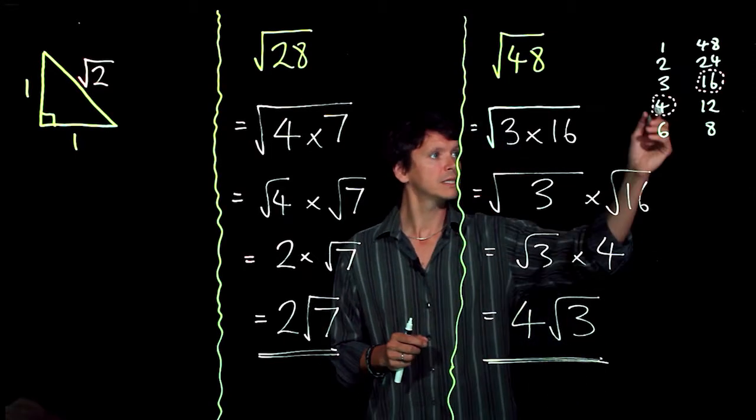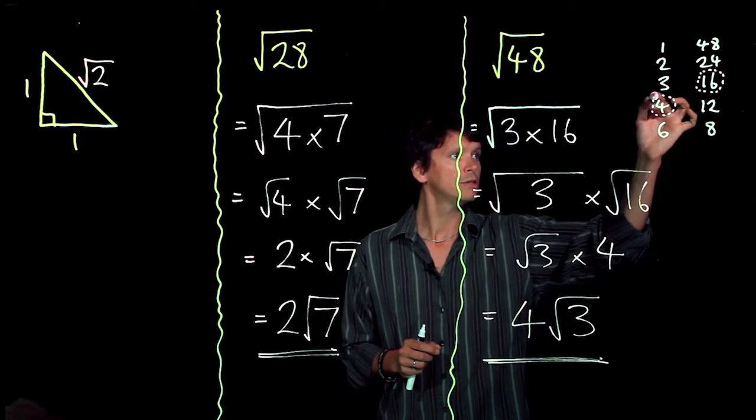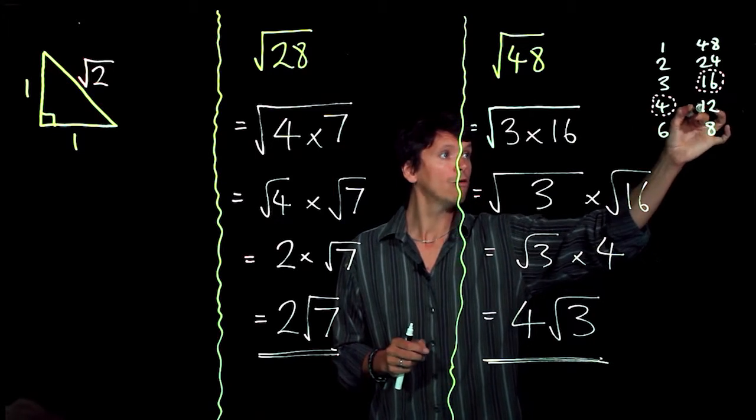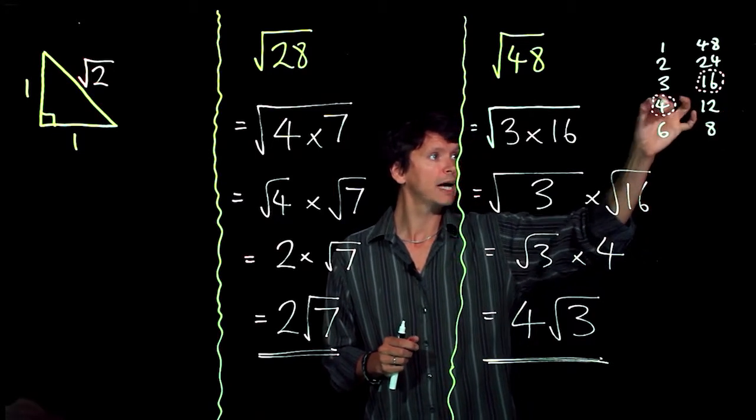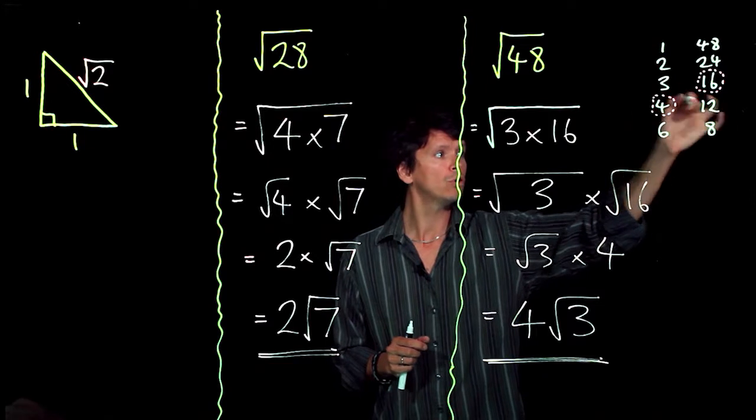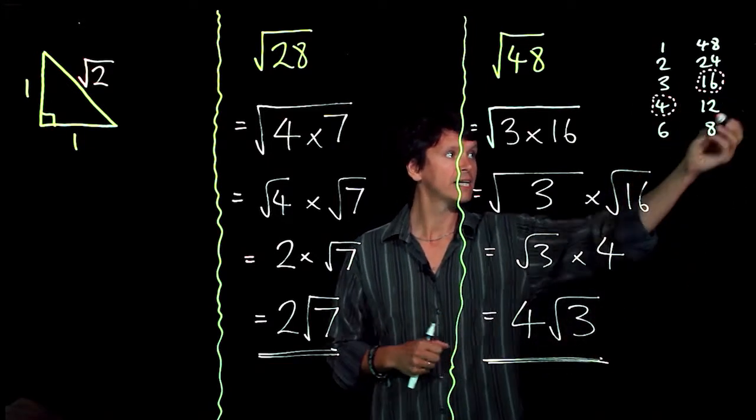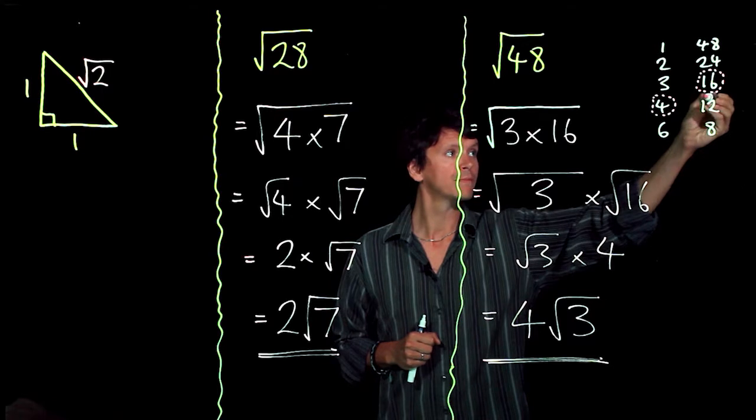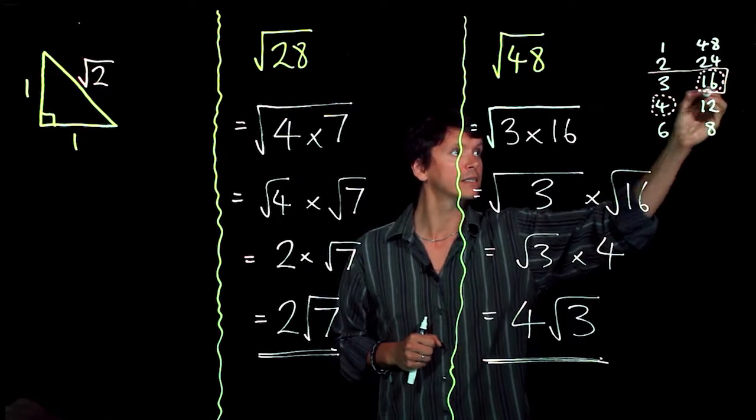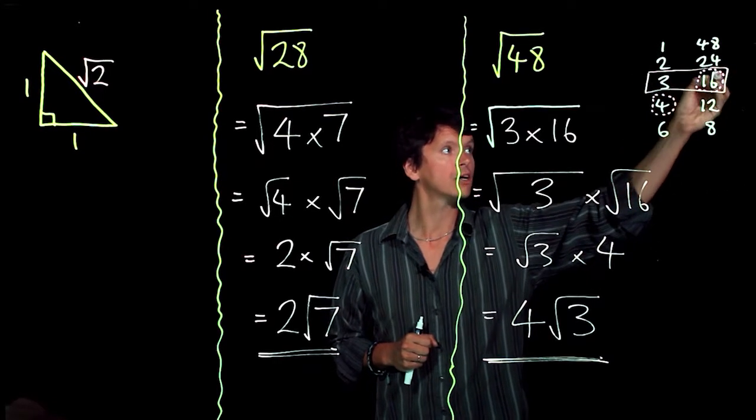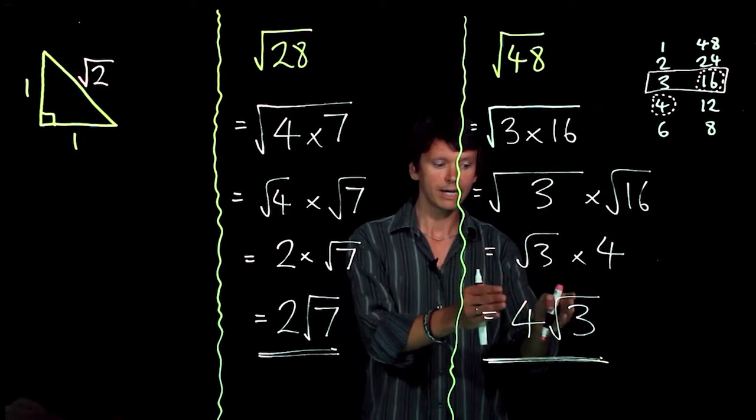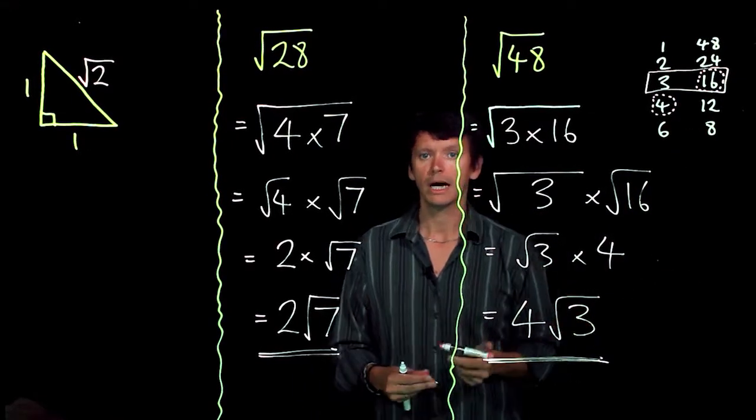Notice if I had picked the other option, 4 and 12, I would have been able to square root the 4, but the number inside my square root at the end would have ended up being 12. And that's why this pair of factors, where I picked the largest square number, gave me the smallest possible surd at the end.